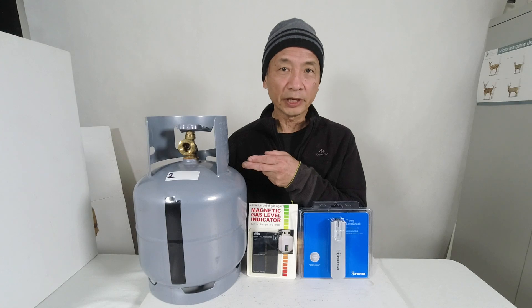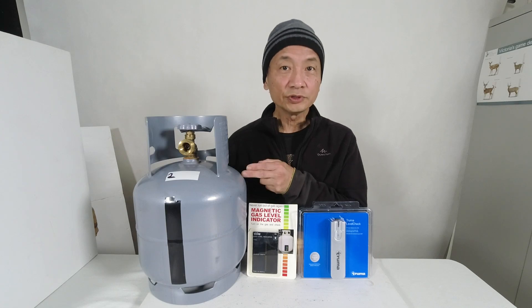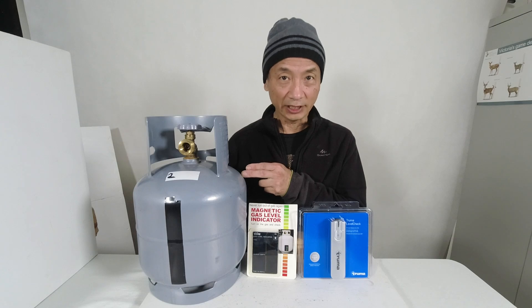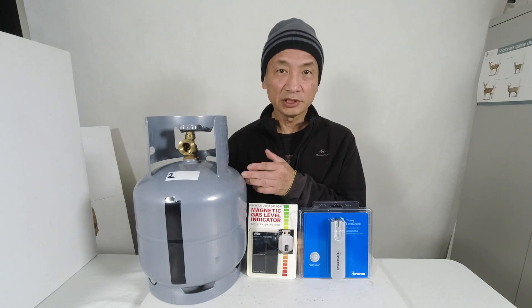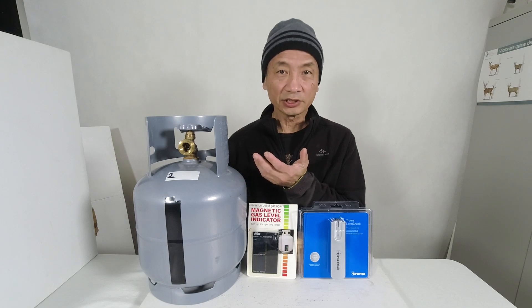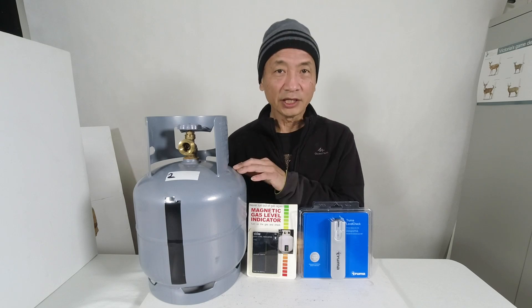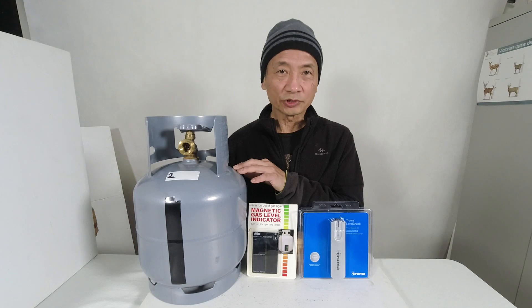I have here a liquid propane gas cylinder. When full, this cylinder will contain four and a half kilograms of gas. Such gas bottles are commonly used for barbecues or in caravans and travel trailers. In my case, this is a gas bottle I removed from my caravan travel trailer.